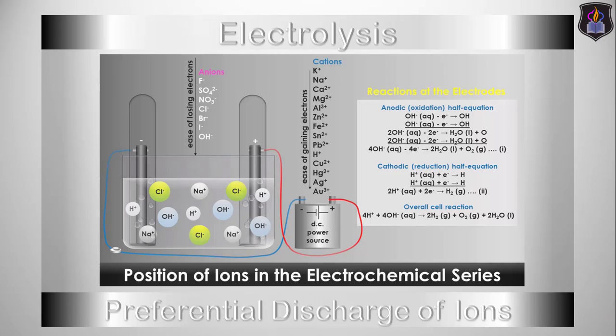Hi there, welcome once again to the science-driven educational series on chemistry. In this video, we'll be looking at the second part of our series on electrolysis: the preferential or selective discharge of ions during electrolysis.